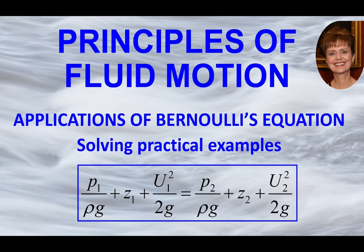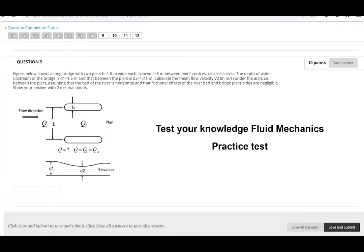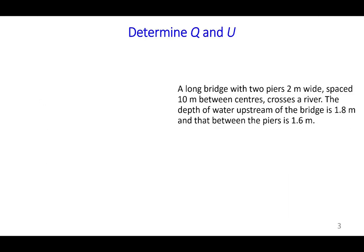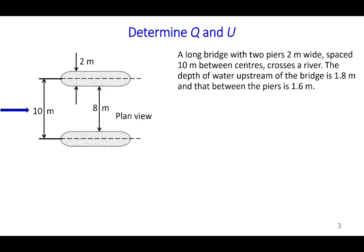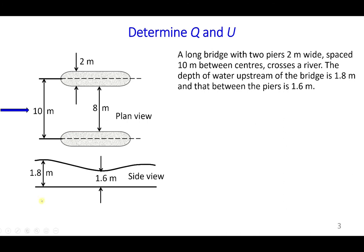The problem comes from a previous video, which is a fluid mechanics practice test, and this is question number nine from that test. The question is: a long bridge with two piers which are two meters wide each, and these piers are spaced 10 meters between the centerline of each pier, crosses the river. The water depth upstream of the bridge is 1.8 meters and under the bridge or between the piers is 1.6 meters, as shown in the plane view and side view figures.